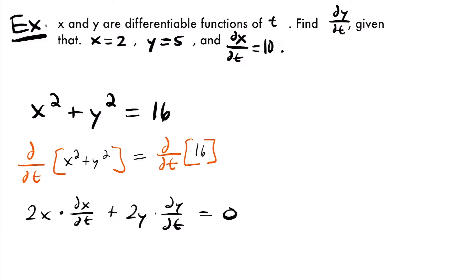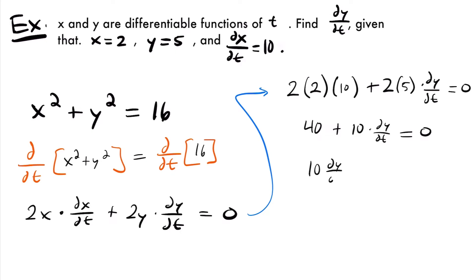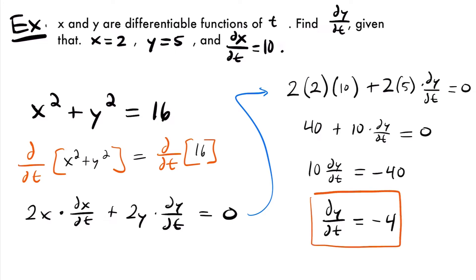Now we plug in the values we know. We have 2 times x, which is 2, multiplied by dx/dt which is 10, plus 2 times y which is 5, times dy/dt, equals zero. So 2 times 2 is 4 times 10 gives us 40, plus 2 times 5 is 10 times dy/dt, equals zero. Subtracting 40 from both sides gives 10 dy/dt equals negative 40. Dividing both sides by 10, dy/dt equals negative 4.